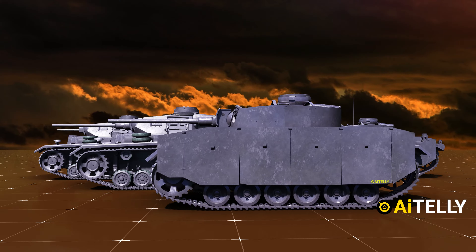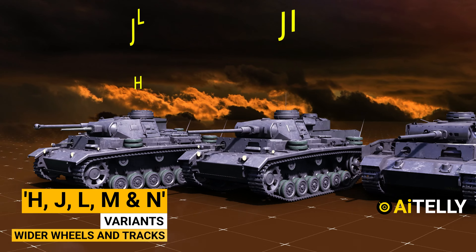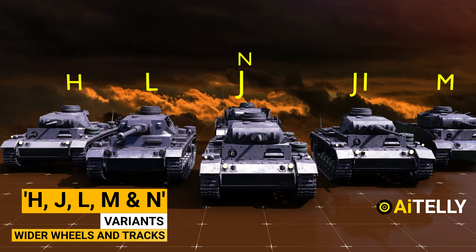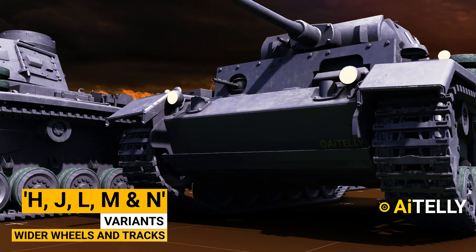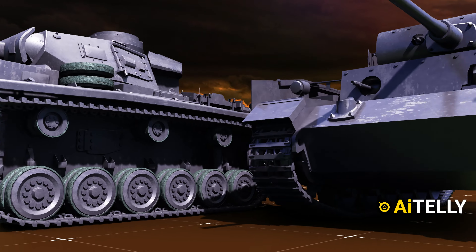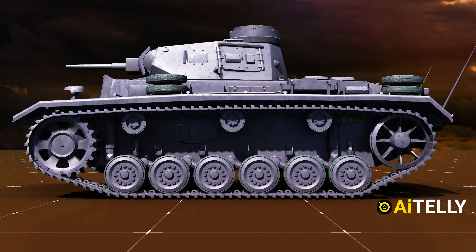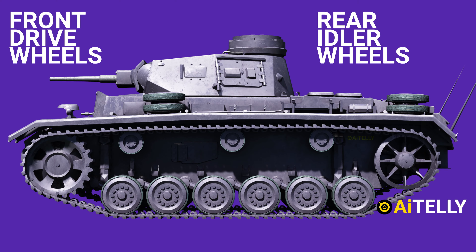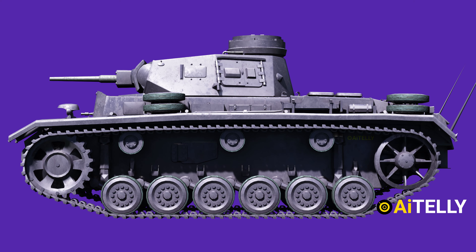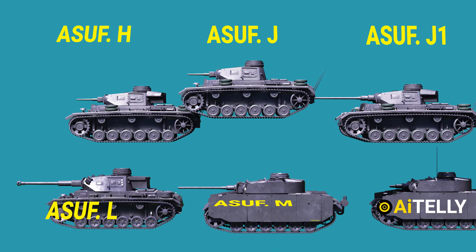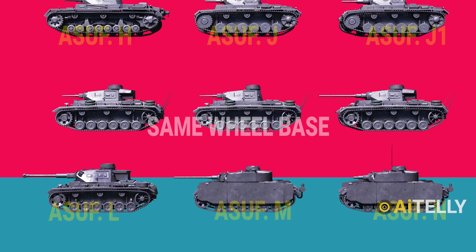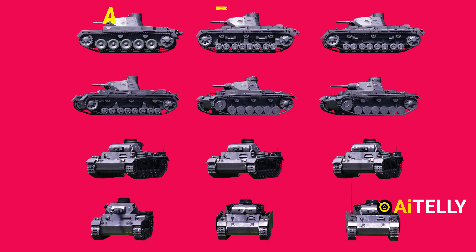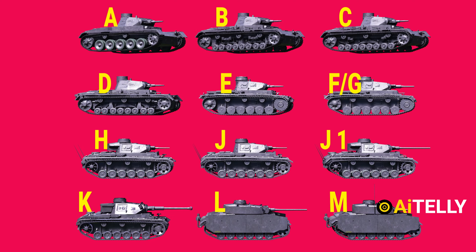Now let's look at the H, J, L, M, and N variants. Wider wheels and tracks were introduced as a result of weight increase. New front drive wheels and rear idler wheels, as well as a new shock absorber, were installed. H tanks were outfitted with the Ausf G shock absorbers and wheels. All these variants have the same wheelbase.